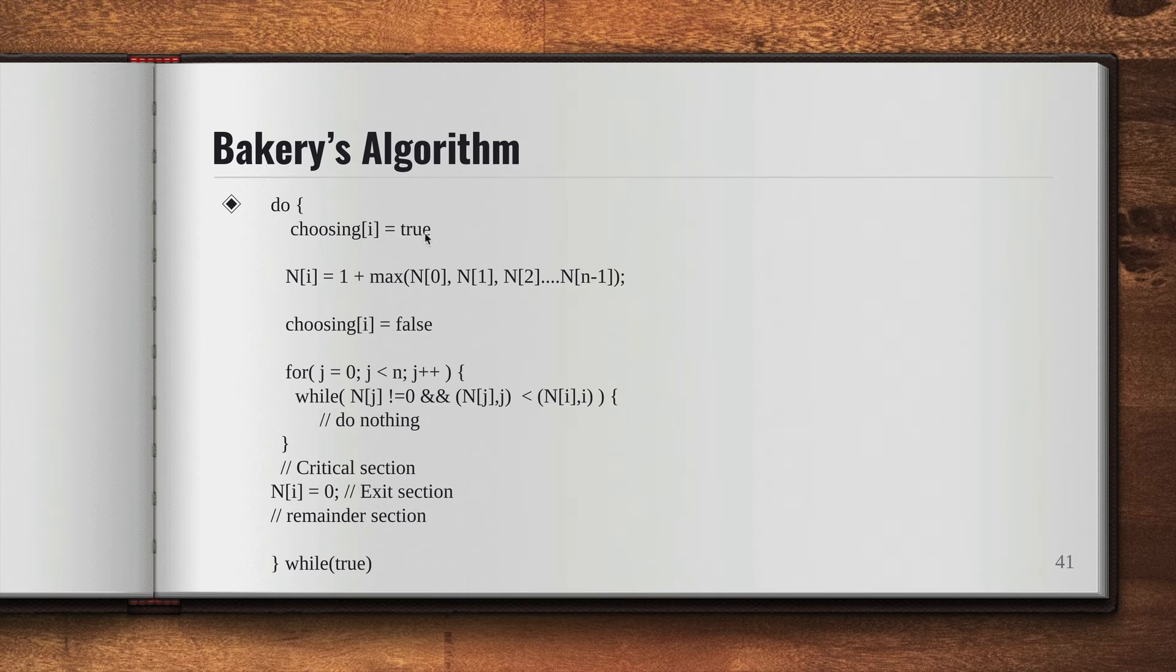Then it chooses the token number larger than the token number assigned to other processes. So this max is going to give the token number that's been assigned to the previous one, so you add one to that. So even in bakeries, if the current token number is 10, then the next customer gets the token number as 10 plus 1, which is 11.